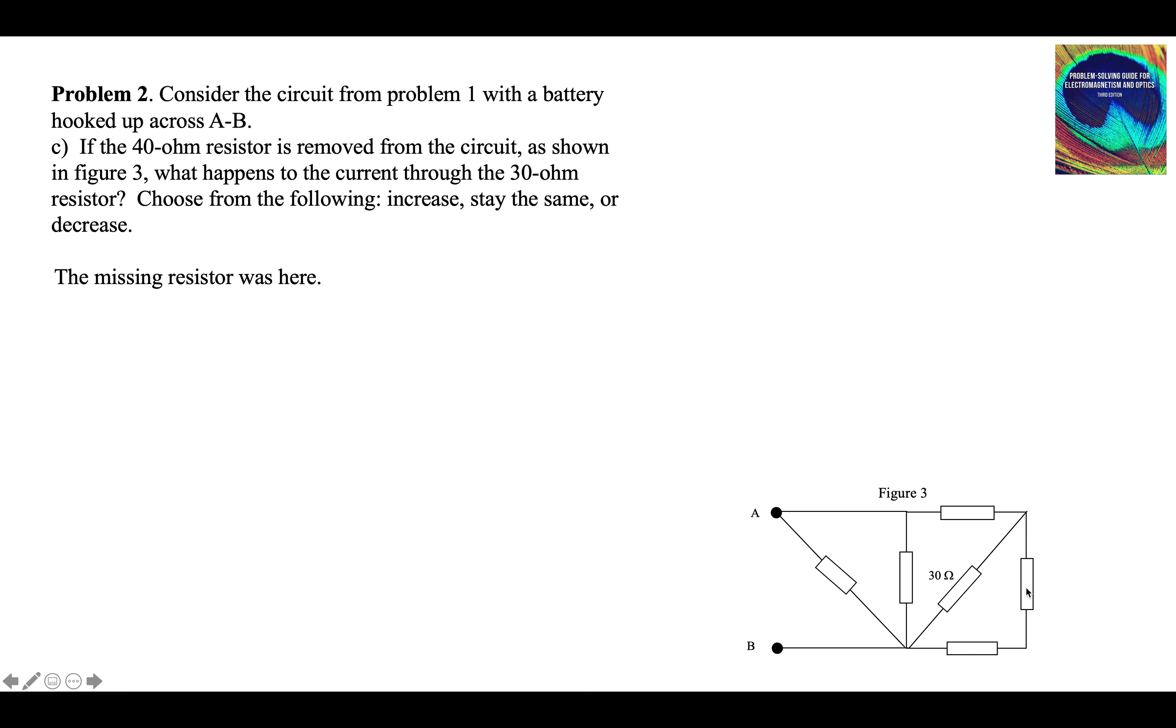The missing resistor was right here. It took that one away. What's the current through the 30 ohm resistor? If we take away this resistor, the resistance through this branch is going to go down.